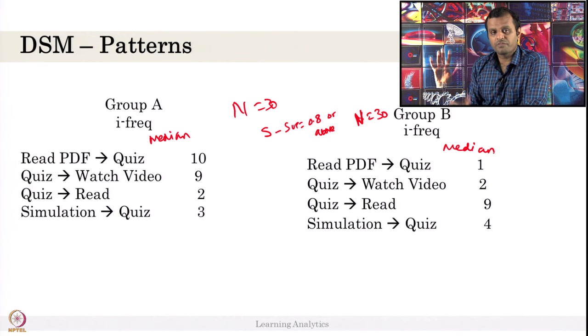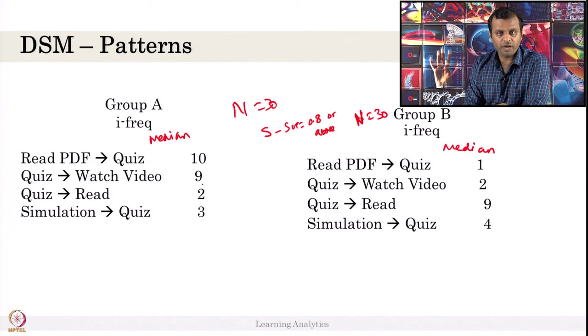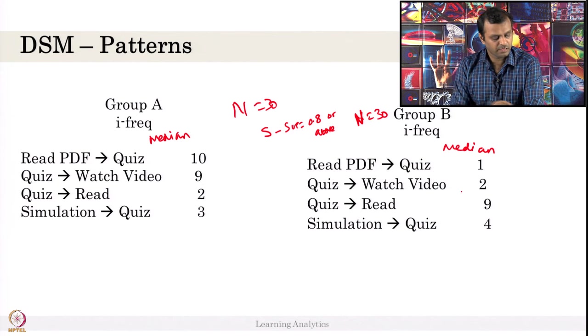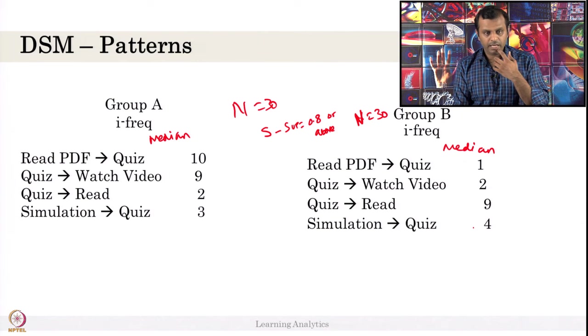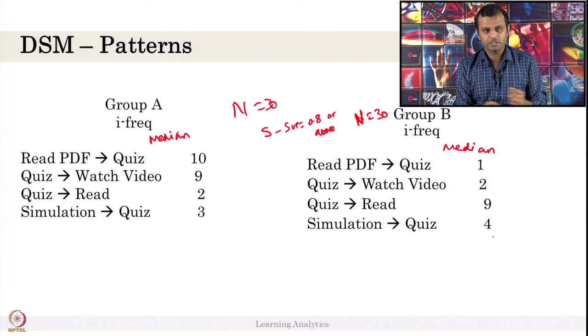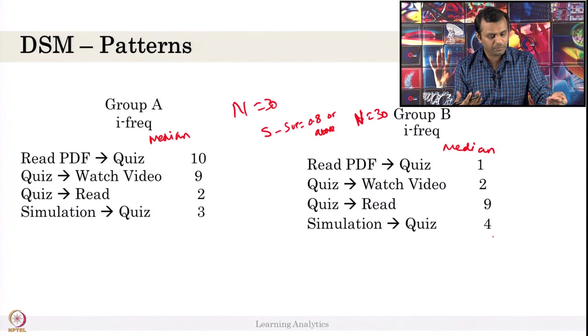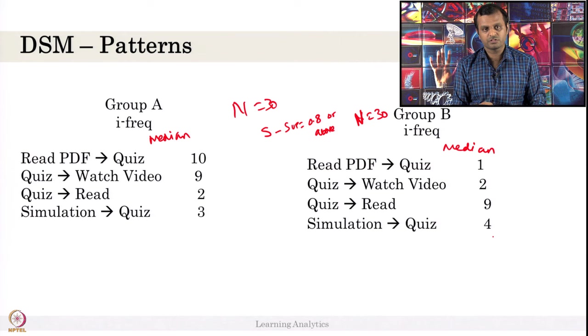You have this median values, high frequency values. This Read to Quiz has occurred 10 times, here it occurred only once - this particular pattern average or median value 1. Quiz to Watch Video occurs 9 times, here 2 times. Quiz to Read occurred 2 times here, but Quiz to Read occurred 9 times here. Simulation to Quiz occurred only twice, where Simulation to Quiz occurred 4 - it is kind of equivalent. Can you identify the difference in behavior between these two groups? It is obvious that this group had more Read to Quiz. Can you identify the other differences in these groups?